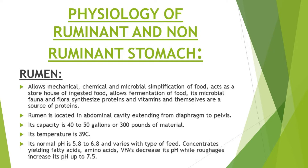First we are going to talk about rumen. Rumen is the compartment of the complex stomach of ruminants that is located in the abdominal cavity and it extends from the diaphragm to the pelvis. Its capacity is 40 to 50 gallons or 300 pounds of material. Its normal or optimum temperature is 39 degrees Celsius.